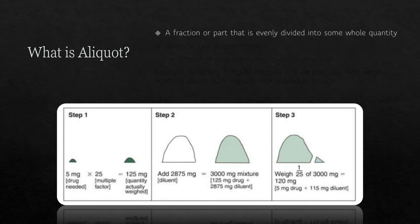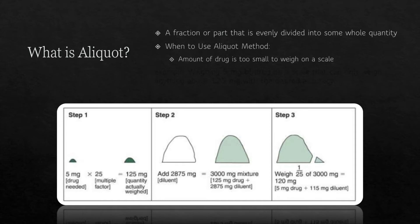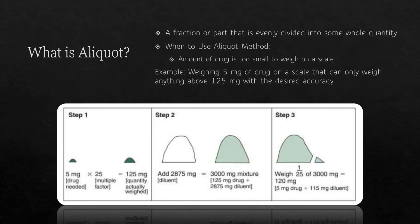So what is aliquant? It's a fraction or part that is evenly divided into some whole quantity. We use the aliquant method when the amount of drug is too small to weigh on a scale with the desired accuracy. For example, weighing 5 mg of drug on a scale that can only weigh anything above 125 mg with the desired accuracy — meaning this scale is much more accurate when weighing anything above 125 mg.